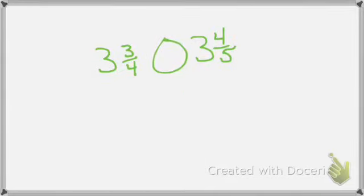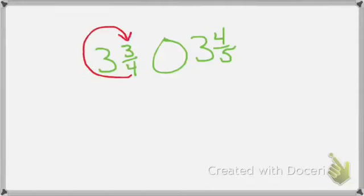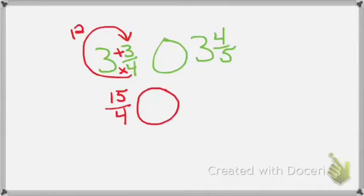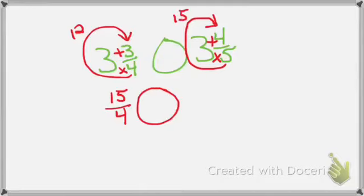I have fractions, but I certainly can't cross-multiply because I can't multiply mixed numbers — I can only multiply simple, straight fractions. I know what to do when I see a mixed number: I can change it into an improper fraction. 4 times 3 is 12, and 12 plus 3 is 15. Denominator stays the same. So 3 and 3-4ths has turned into 15-4ths. Let's change the next one: 3 times 5 is 15; 15 plus 4 is 19, and my denominator stays the same. So 3 and 4-5ths has turned into 19-5ths.